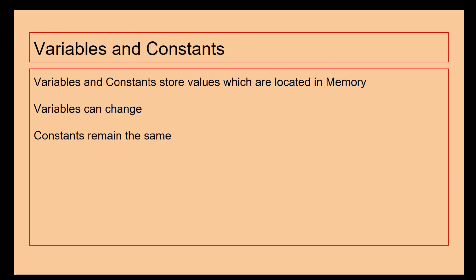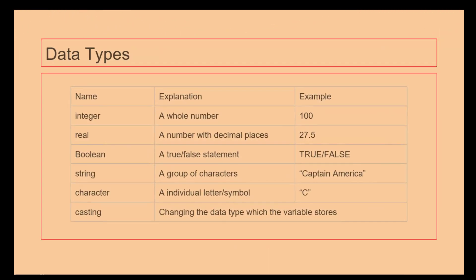Variables can change. So we could have a variable for age each year, that would change. We could have a variable for shoe size because shoe size changes. Constants, however, always remain the same. So you could have a constant called DNA because your DNA will hopefully always stay the same. So we've got variables which can change, constants which remain the same and they are both located somewhere in system memory.